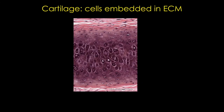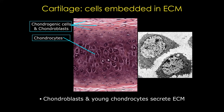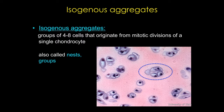Cartilage cells are easy to remember. The chondrocyte is produced from progenitor cells called chondroblasts, and both chondroblasts and younger chondrocytes can produce extracellular matrix, as you can see in this electron micrograph. The chondrocytes are located in cavities, or lacunae, and when they divide, the daughter cells remain in close contact and often form groups called isogenous aggregates — also called isogenous groups or isogenous nests — surrounded by the extracellular matrix that they produce.